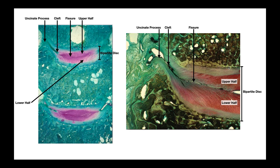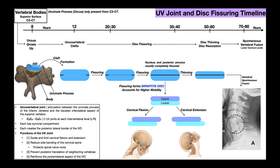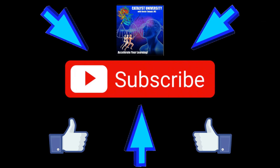Looking again at the histological image, the fissuring has extended from the uncovertebral cleft and divided the disc into an upper half and a lower half — collectively termed the bipartite disc. A zoomed-out image of the cervical spine shows two discs staining purple; the cleft and uncinate process are visible, and fissuring creates a distinct upper and lower half. This video covered the timeline of how the uncinate process induces disc fissuring, leading to the bipartite disc and increased cervical mobility, as well as the effects of disc thinning potentially leading to spontaneous vertebral fusion. Please like this video and subscribe for future videos and notifications.